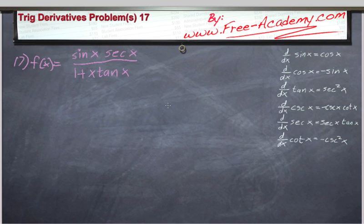In this video presented by www.free-academy.com, we're going to practice trigonometric derivatives by doing problem 17 out of the textbook. Problem 17 gives us f of x is equal to sine of x times secant of x divided by 1 plus x times tangent of x.